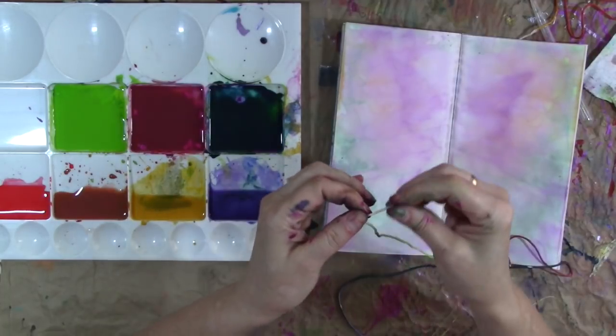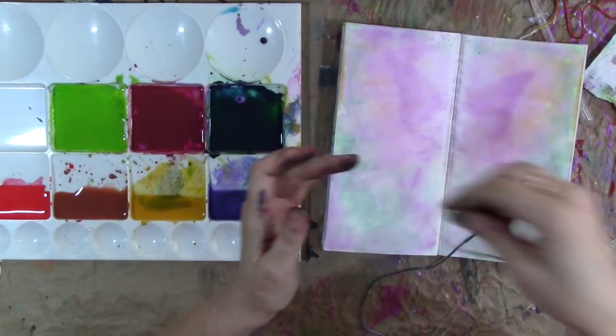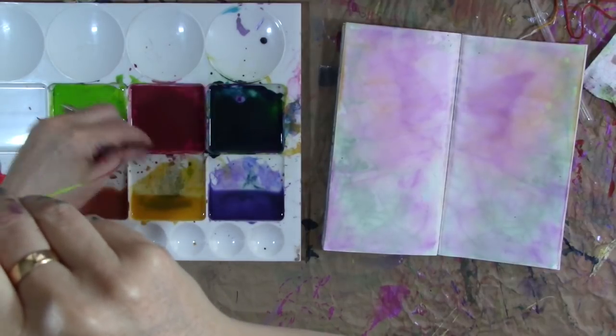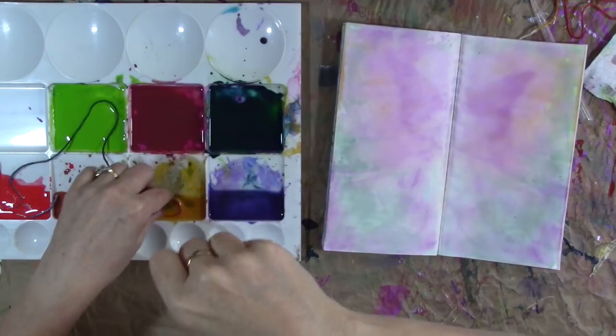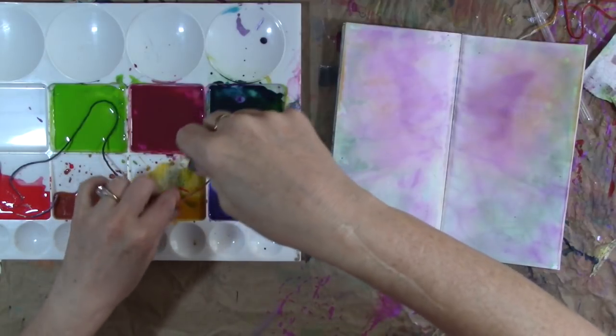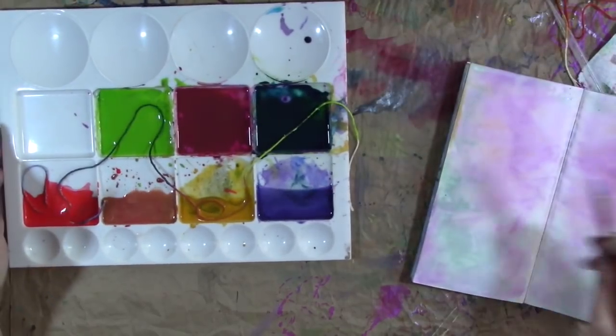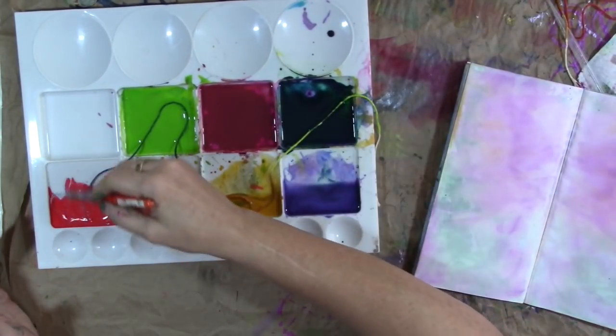I always kind of try to remember to keep one end clean. That's my handle. And then I just dip the other ends. Let's do red, green, yellow. And this just was green, and then it was blue, and then it was pink, and now it's just a mess, but that's all right.